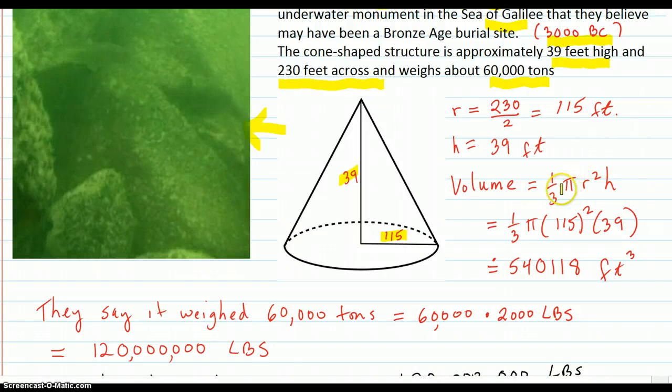And here's a volume formula for a cone. So we're just verifying a few things here. This is how many cubic feet it is. And they say it weighed 60,000 tons. So how many pounds is that? 60,000 times 2,000 per ton. This amount of pounds.